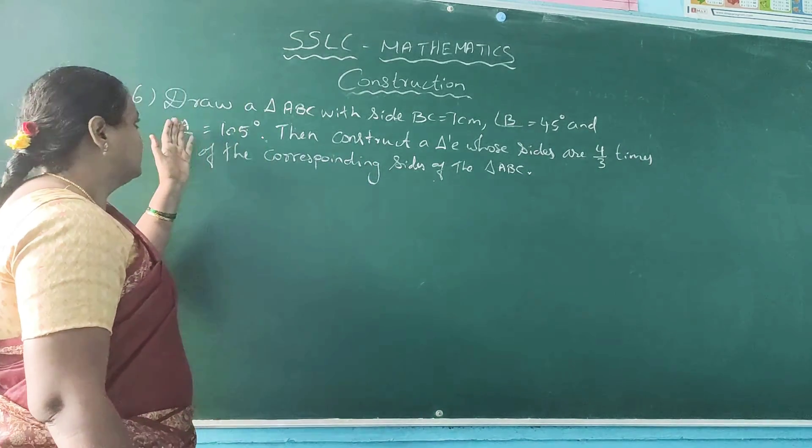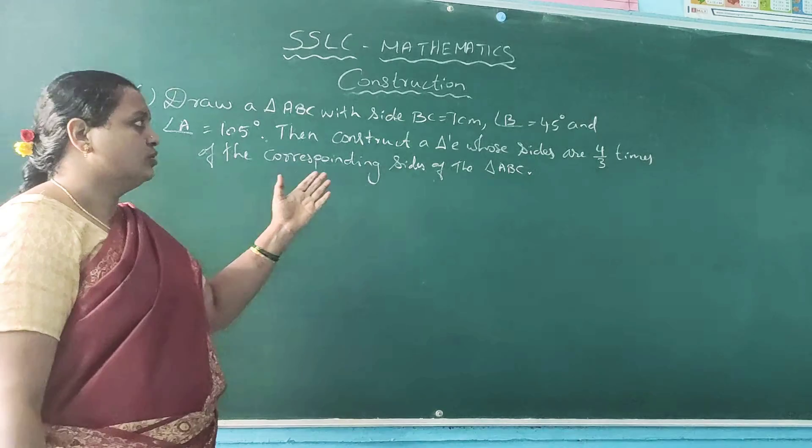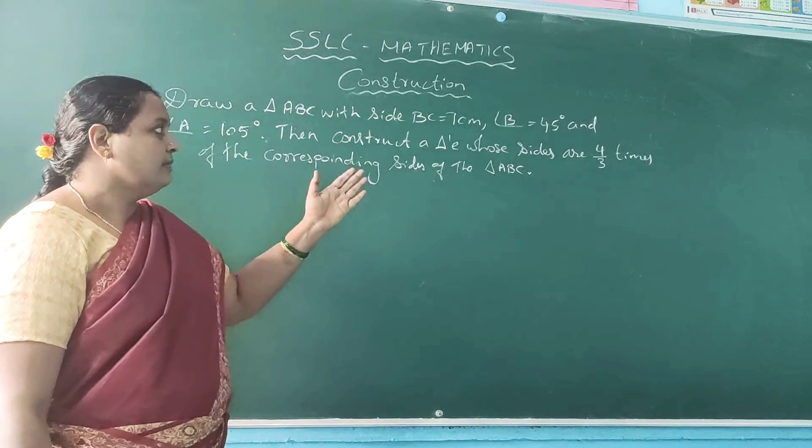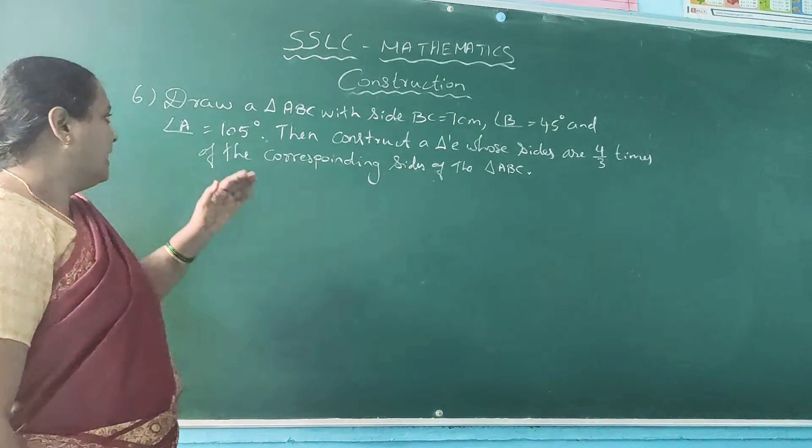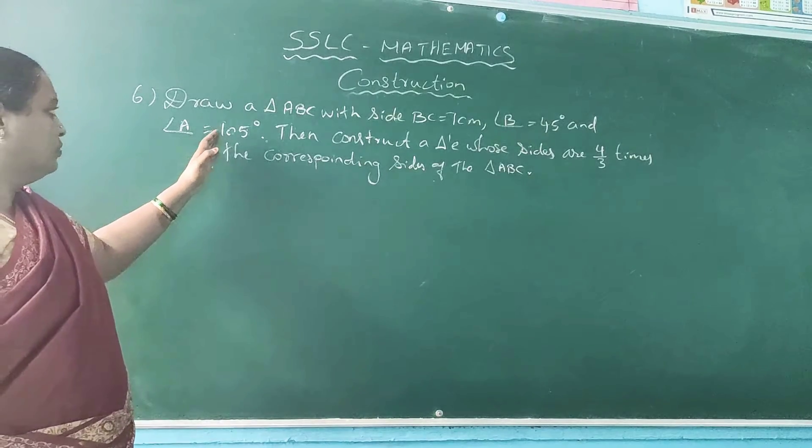Let me read the question. Draw a triangle ABC with a side BC is equal to 7 cm, angle B is equal to 45 degree and angle A is equal to 105 degree.